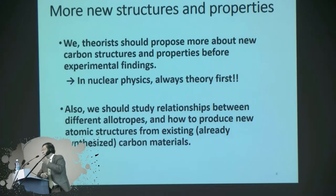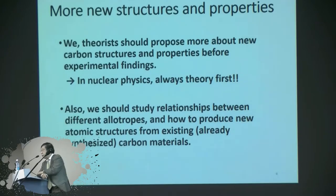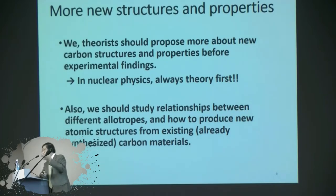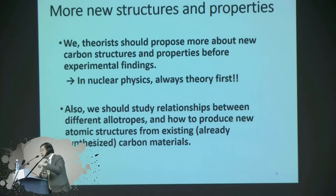So there are more new structures and properties. I'm a theorist; most of you are experimenters. You know, in nuclear physics — I actually graduated in nuclear physics — theorists always predict something and experiments only follow to find it. But in material science, solid state physics, and quantum chemistry, experimenters make something and theorists only explain. This is no meaning for theorists. So I want to predict something new, and please follow me to make it. We should also study the relationship between different allotropes — how to make it from graphene to diamond.